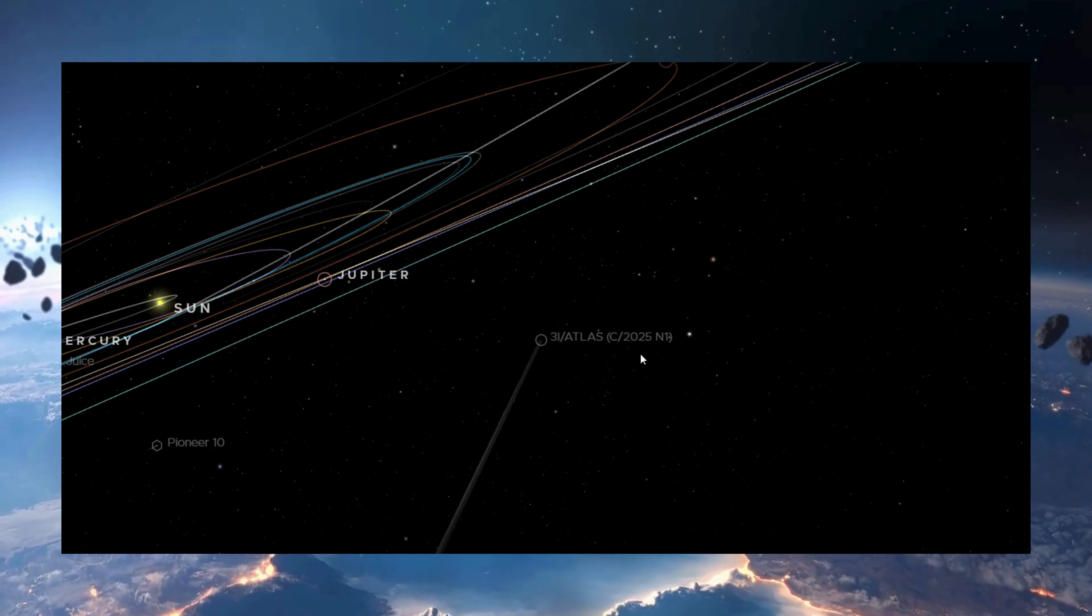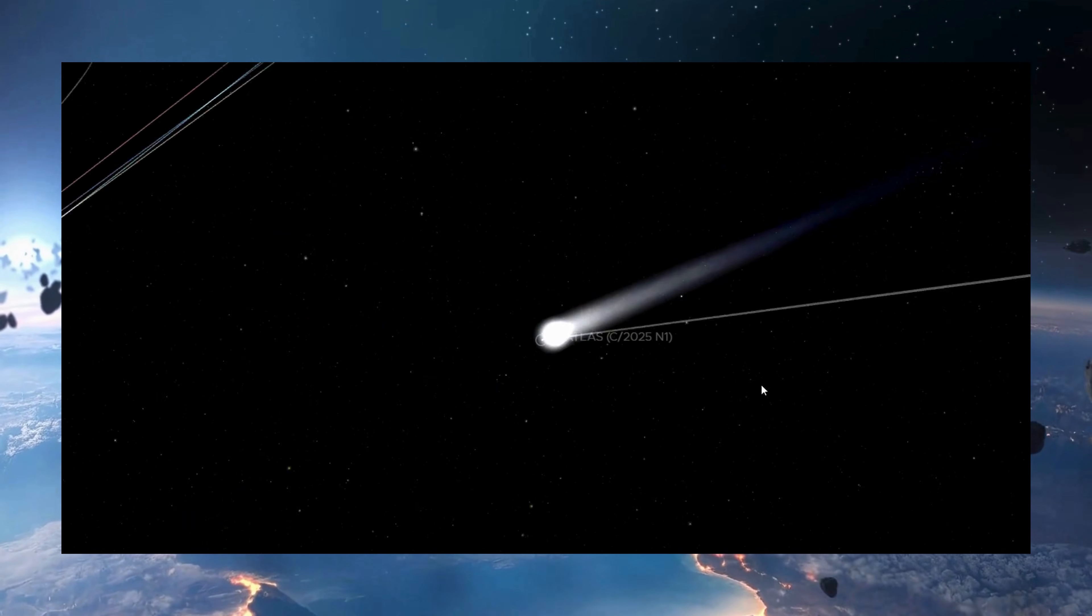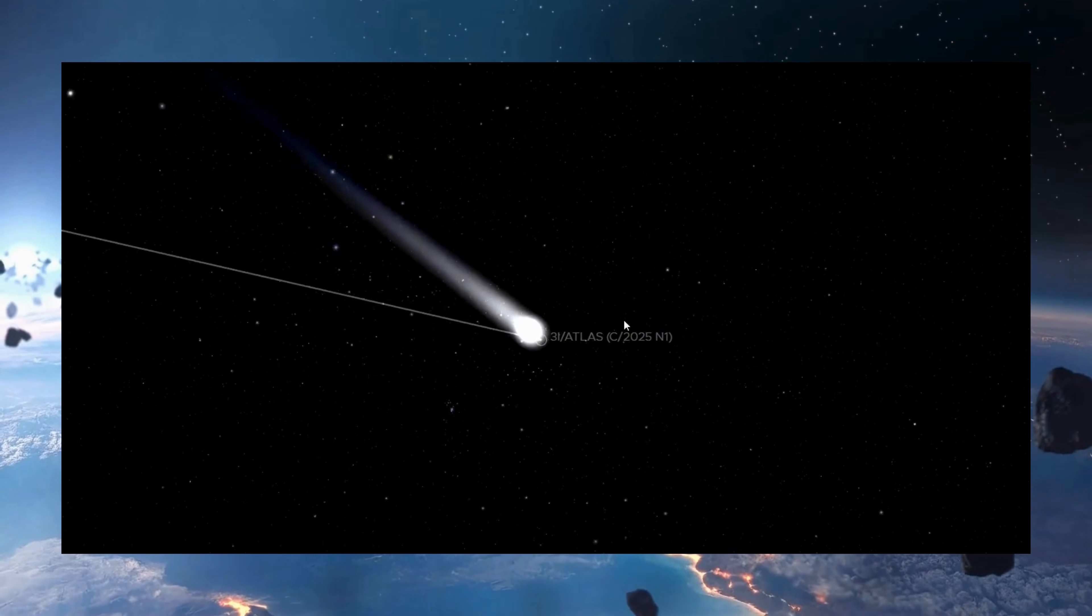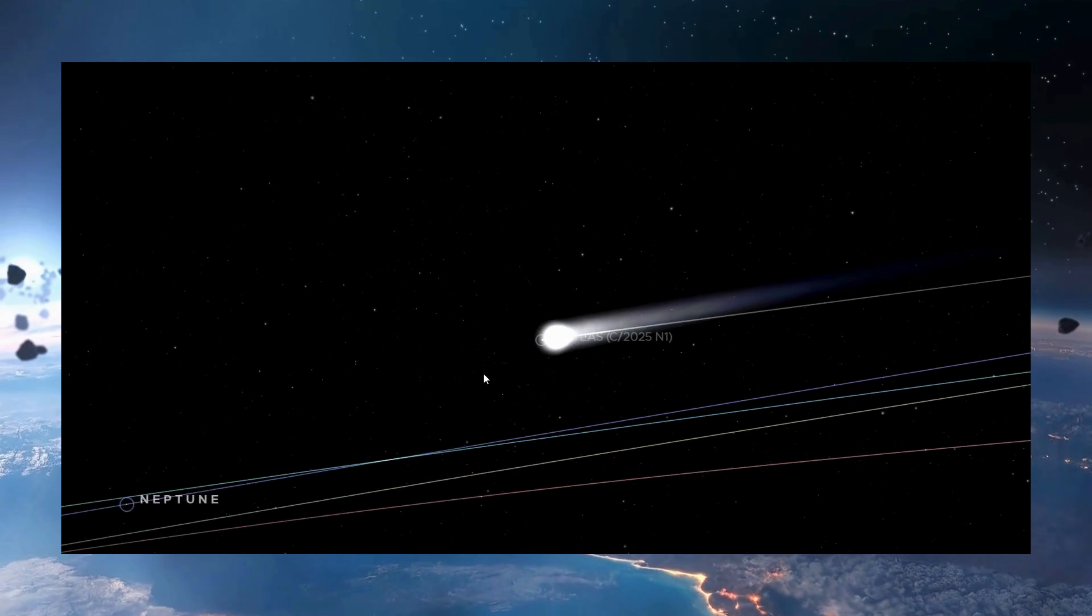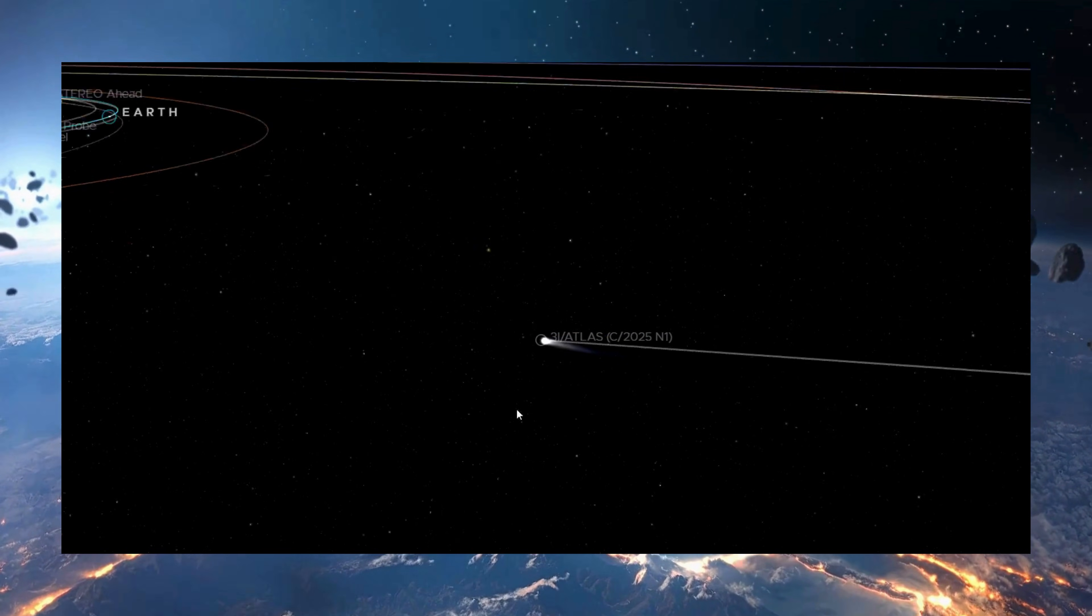And yet, thanks to ultra-precise tracking from hundreds of observatories across the world, scientists can detect even this microscopic nudge. So how does this tiny push tell us how big the object is? It comes down to physics.